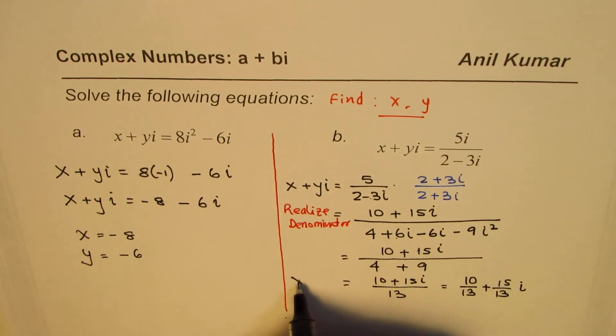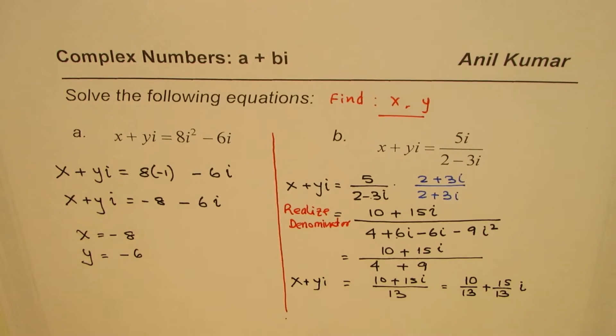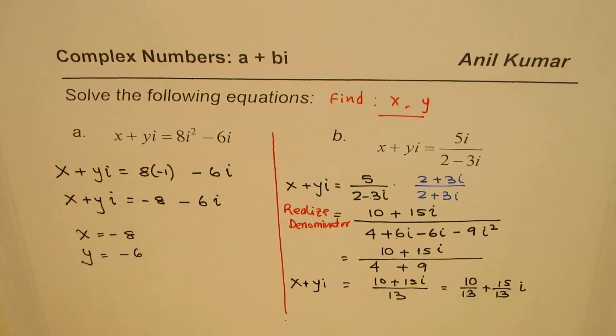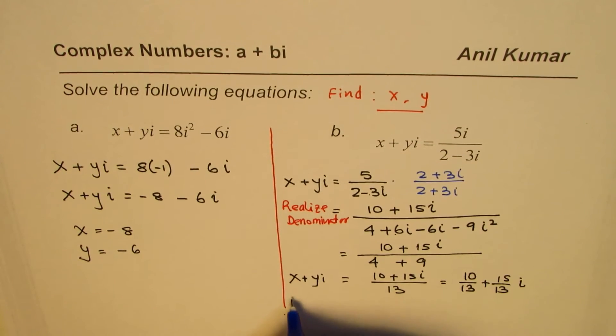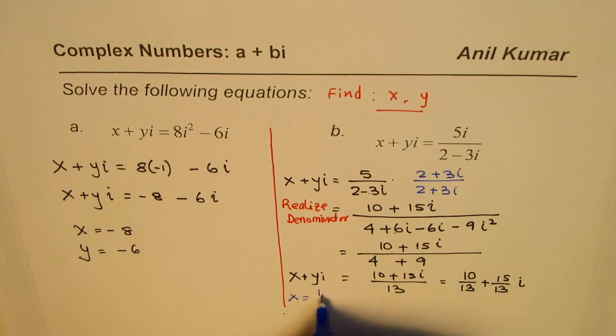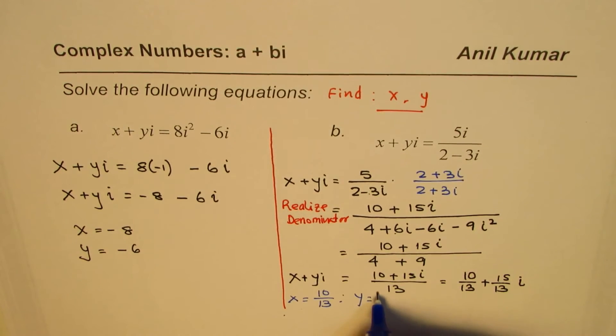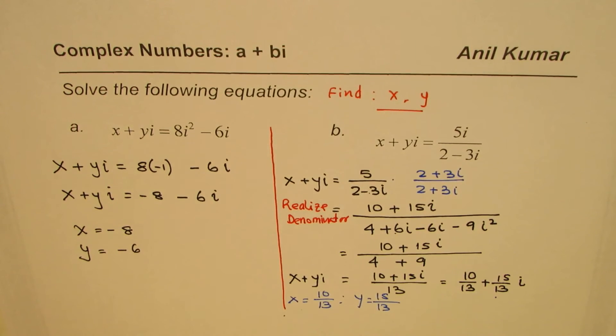Now you can compare the real and imaginary parts to get the solution. The solution is x equals 10 over 13 and y equals 15 over 13. Just compare the real and imaginary parts of the two equations to get the solution.